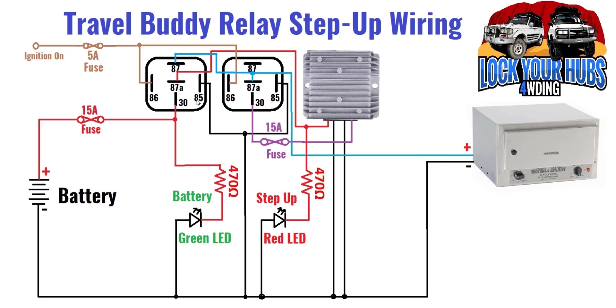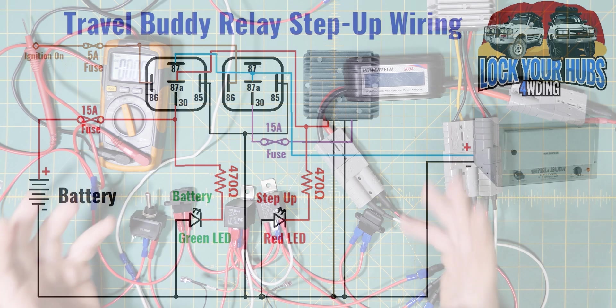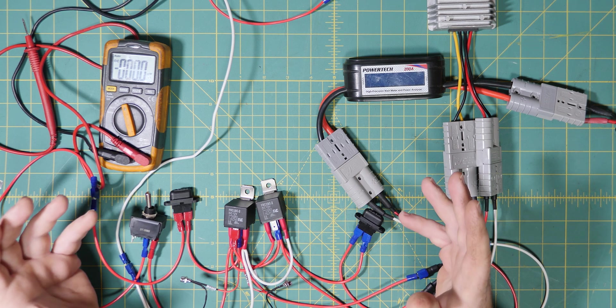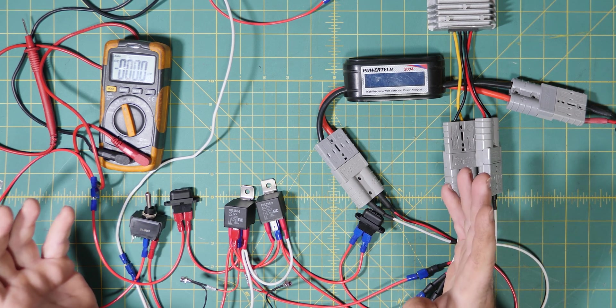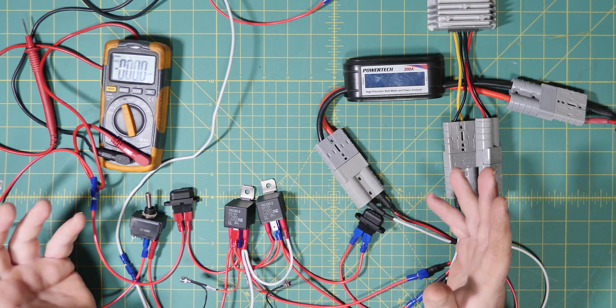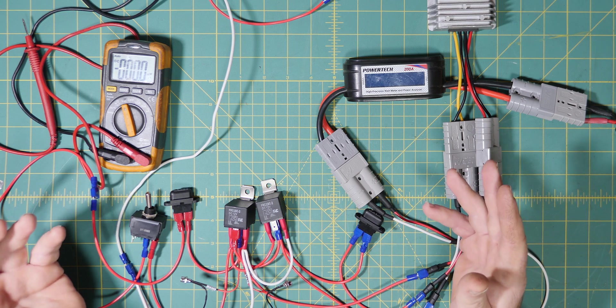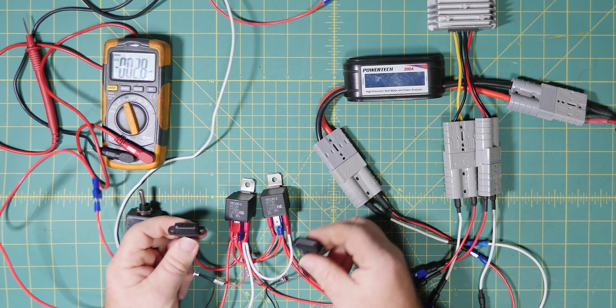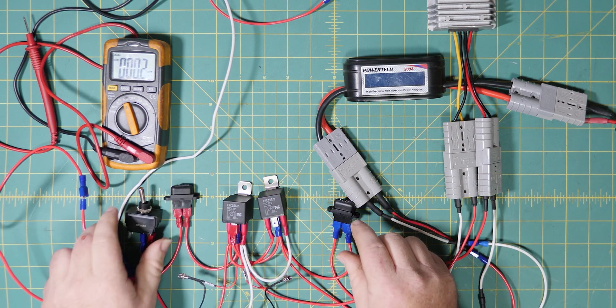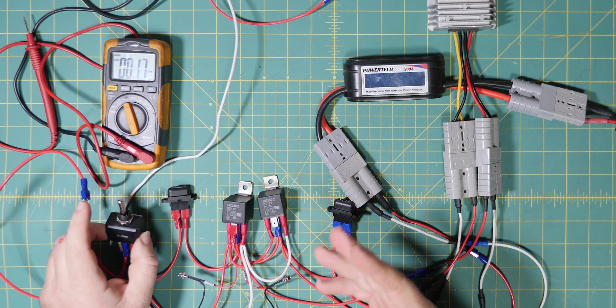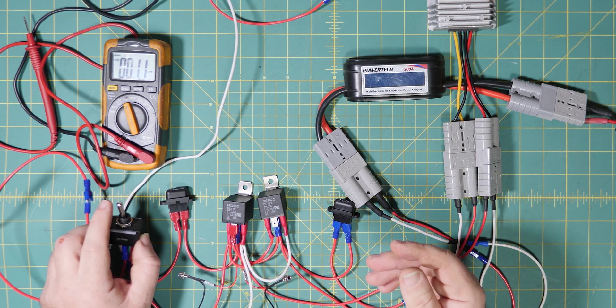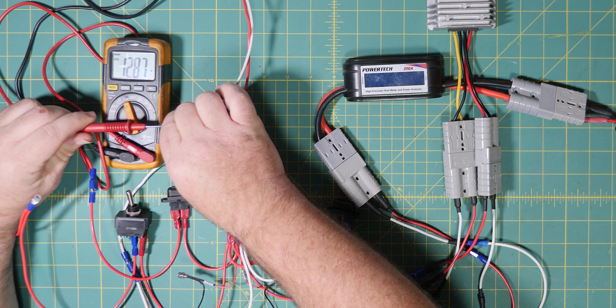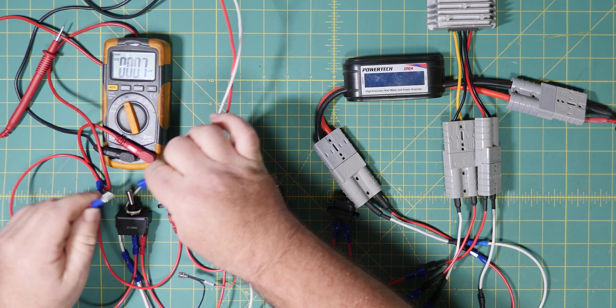Here we have what could only be described as an automotive wiring masterpiece—any auto electrician would be happy to call this their own. We're not using a breadboard because at these current levels it'd fry it. We still have our two indicating LEDs, two automotive relays, two fuses protecting input and output, and a switch to simulate power coming from the ignition. Our input voltage is sitting at about 12.8 volts, so let's energize the circuit and see what happens.